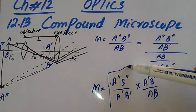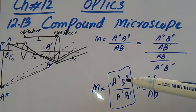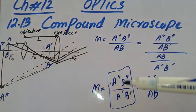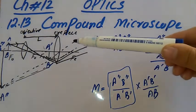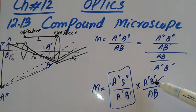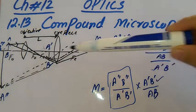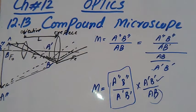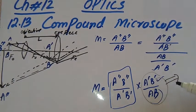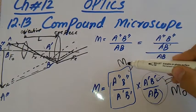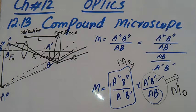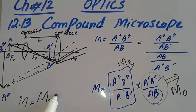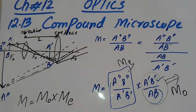Looking at this formula, the final image size divided by the first image size gives the magnification of the objective, and the first image size divided by the object size gives the magnification of the eyepiece. So the total magnification M is equal to MO × ME, where MO is the magnification of the objective lens and ME is the magnification of the eyepiece.